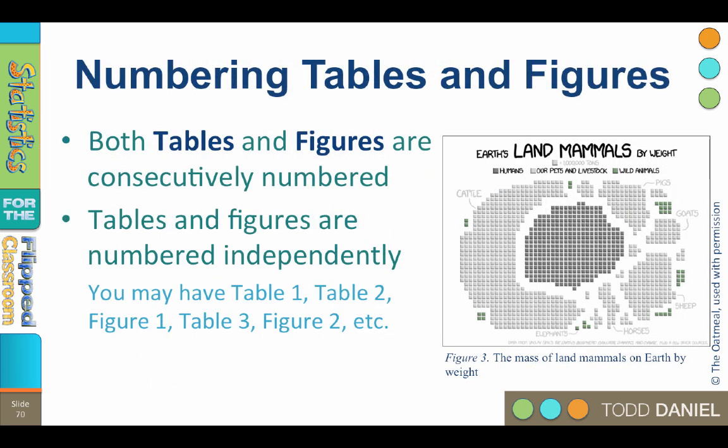Both tables and figures are consecutively numbered, but tables and figures are numbered independently. So for instance, you may have table 1, table 2, figure 1, table 3, figure 2, etc.